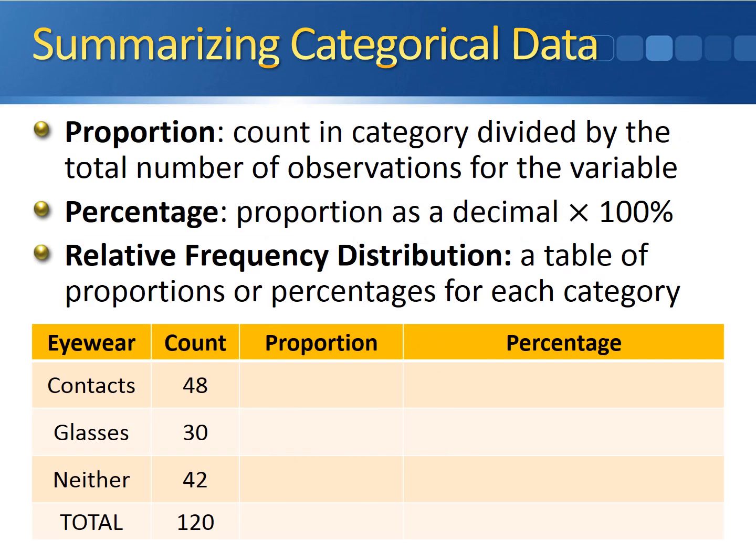There are also two other measures we can use to describe categorical data, both related to the count or frequency. One of them is the proportion, which is the count in each category divided by the total number of observations for the variable.